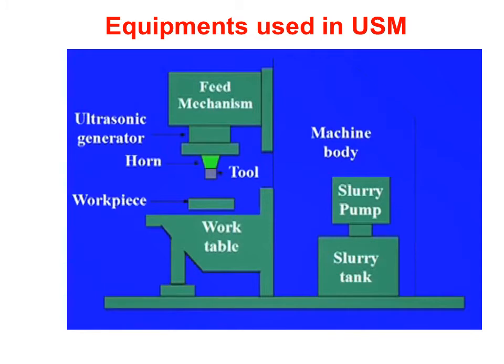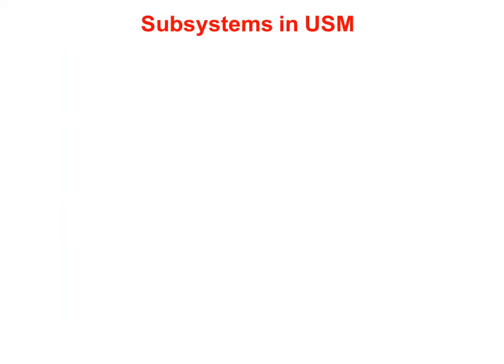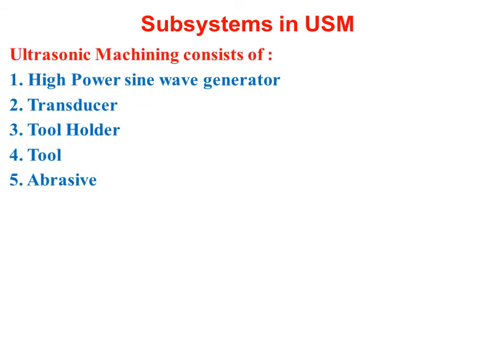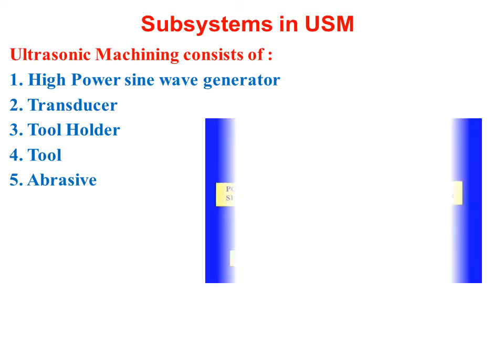The equipment used in USM is schematically explained in this diagram. We have the work table on which the work piece is fixed, then the tool is placed at the bottom, and the ultrasonic generator. On the right side, we have the slurry tank and slurry pump. The various subsystems in USM are: high power sine wave generator, transducer, tool holder, tool, and abrasives.